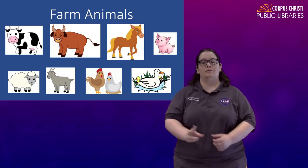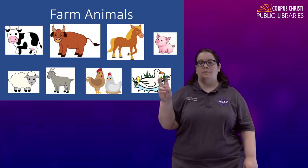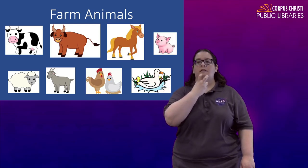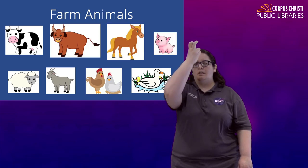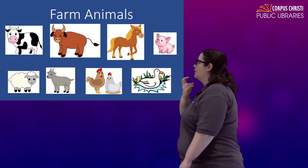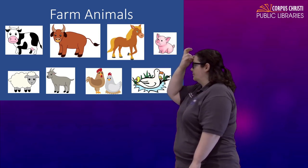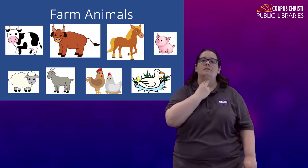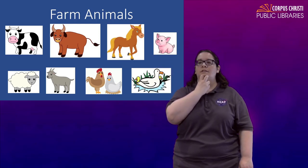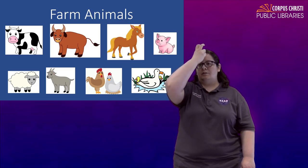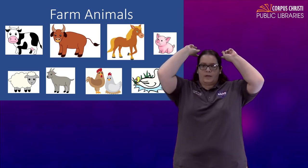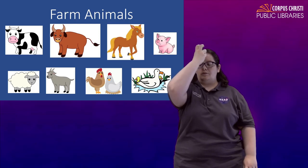For goat you're going to take that bent V again and touch it to your chin and then your forehead. Goat. Think of the little beard that the goats have right at their chin and then those horns on their head that go back. Goat.